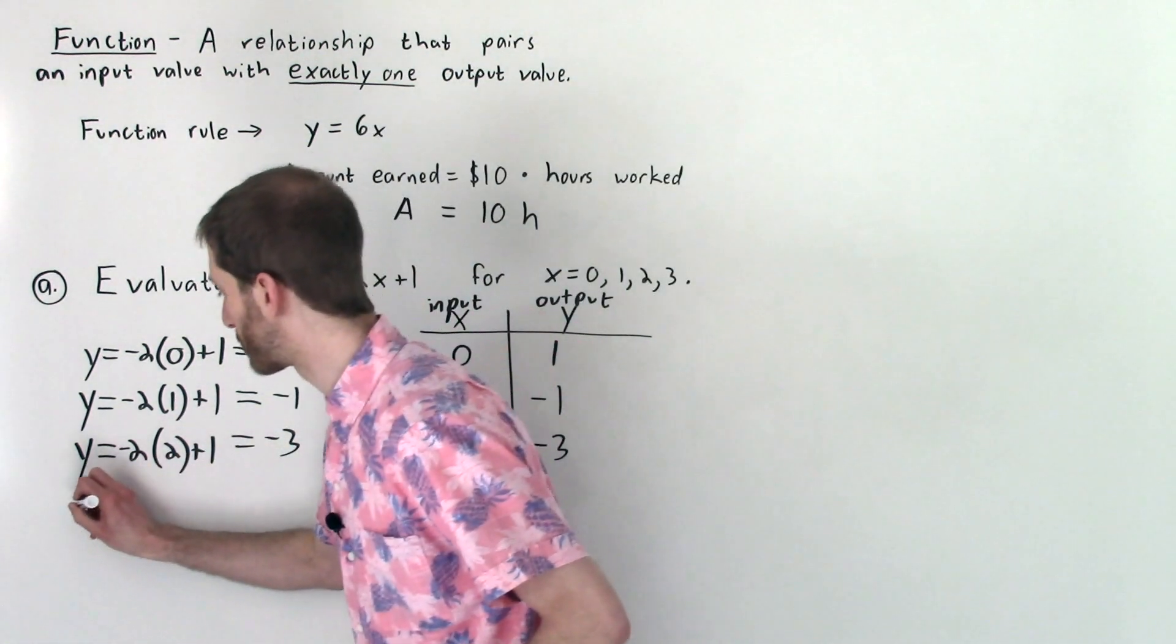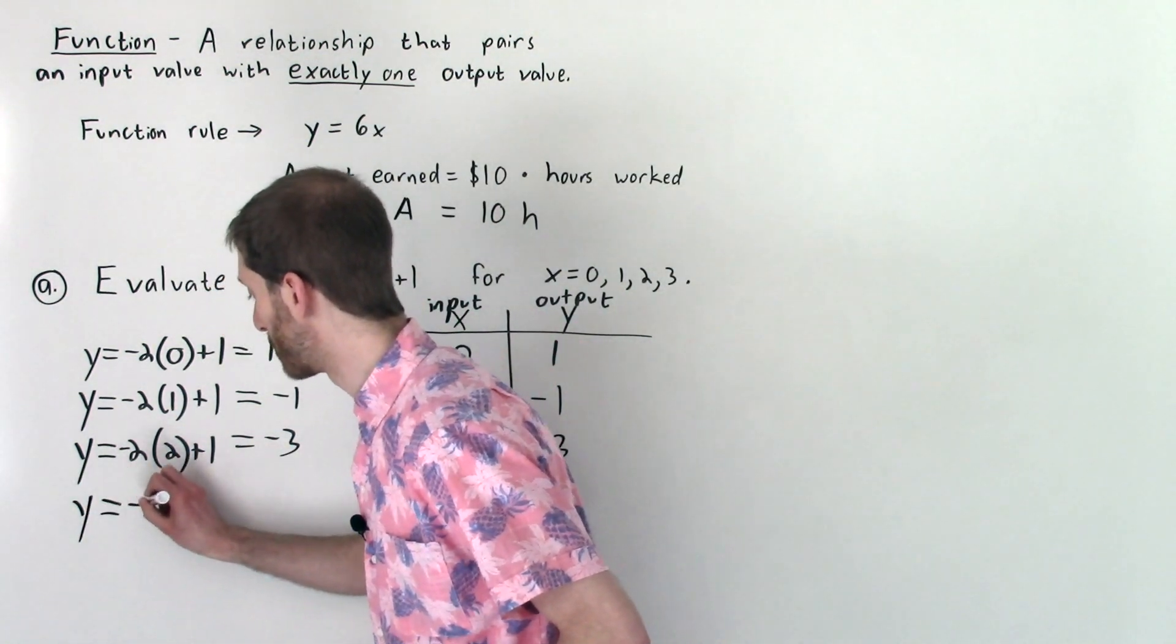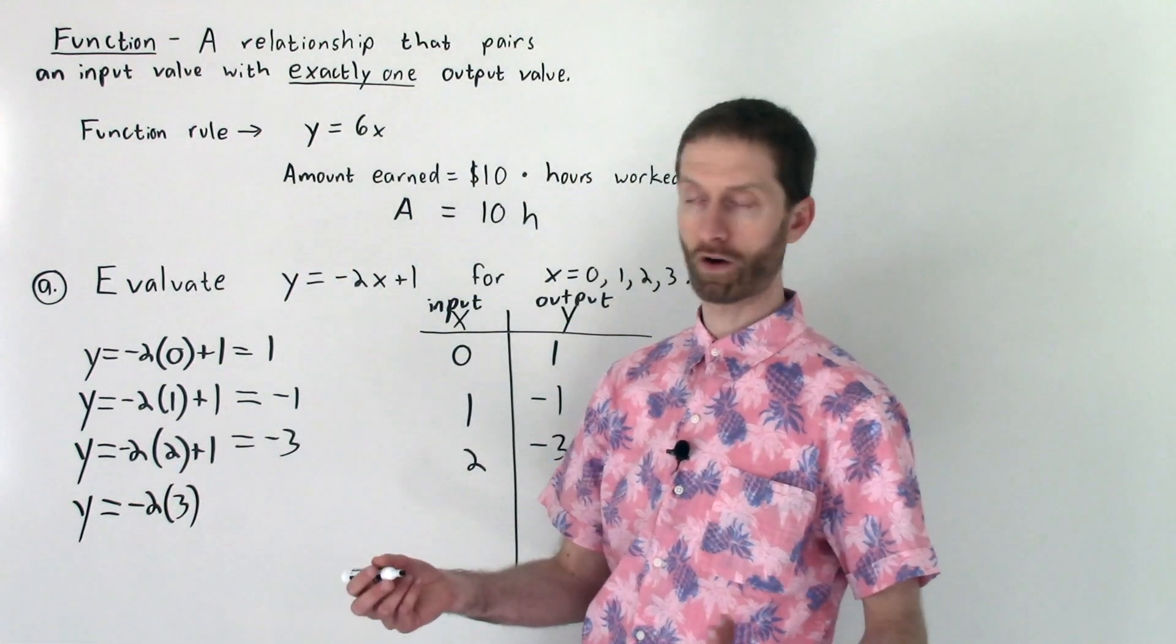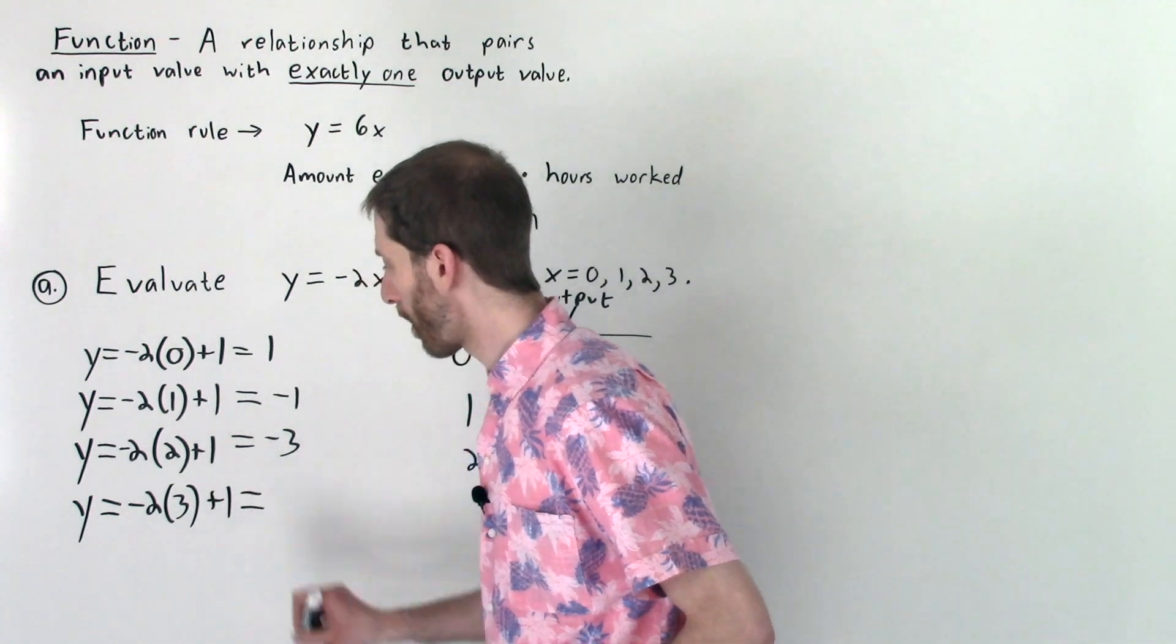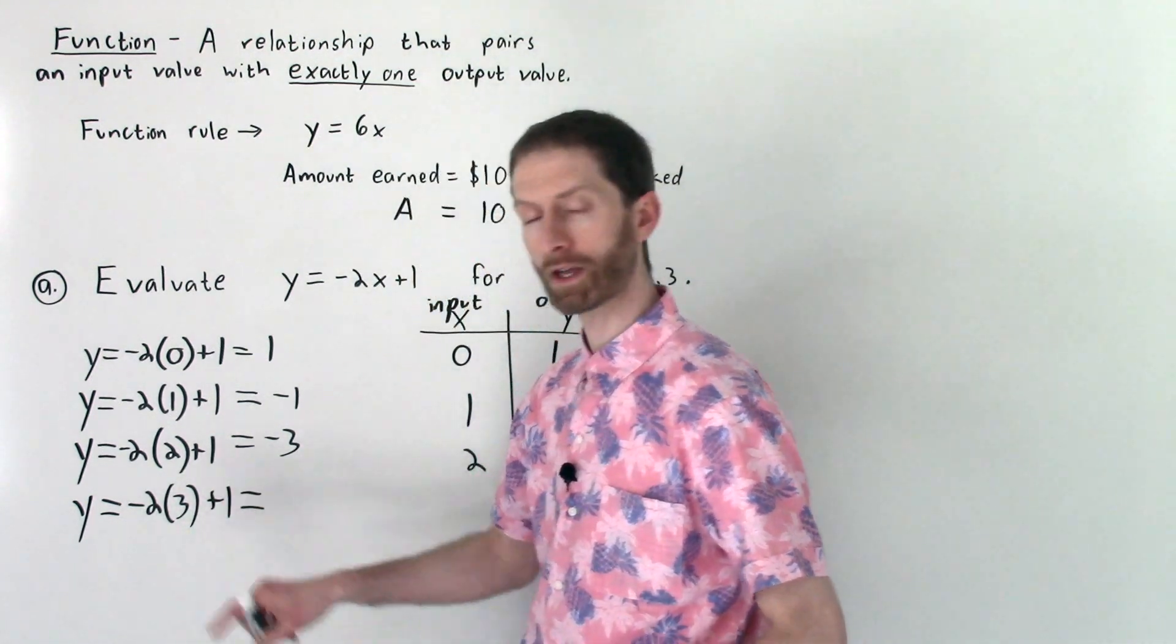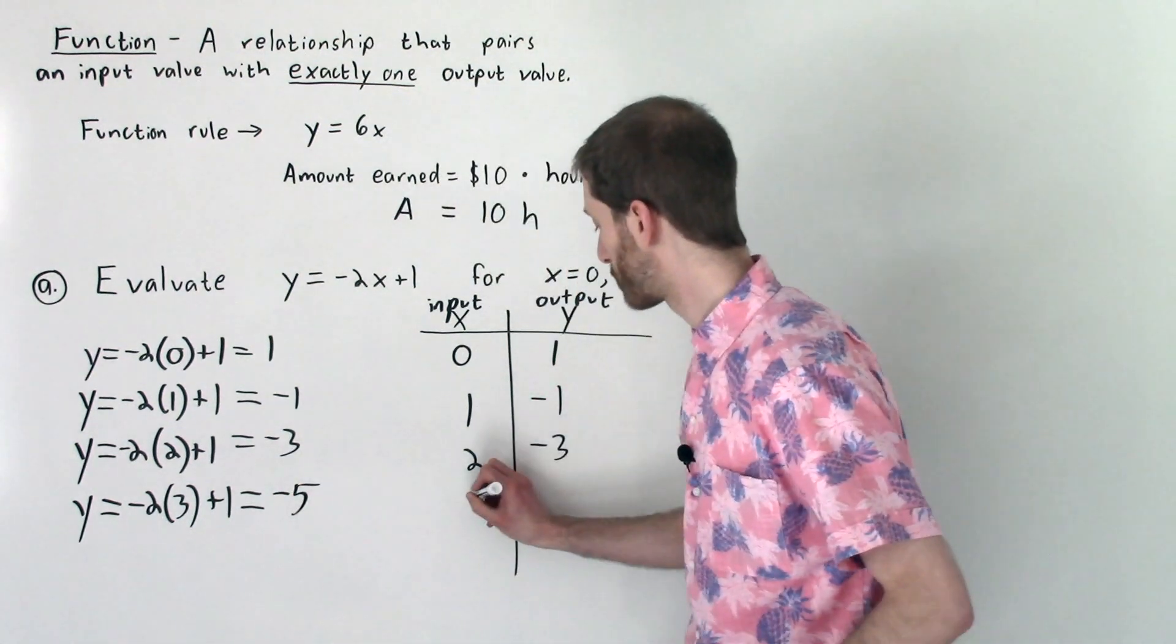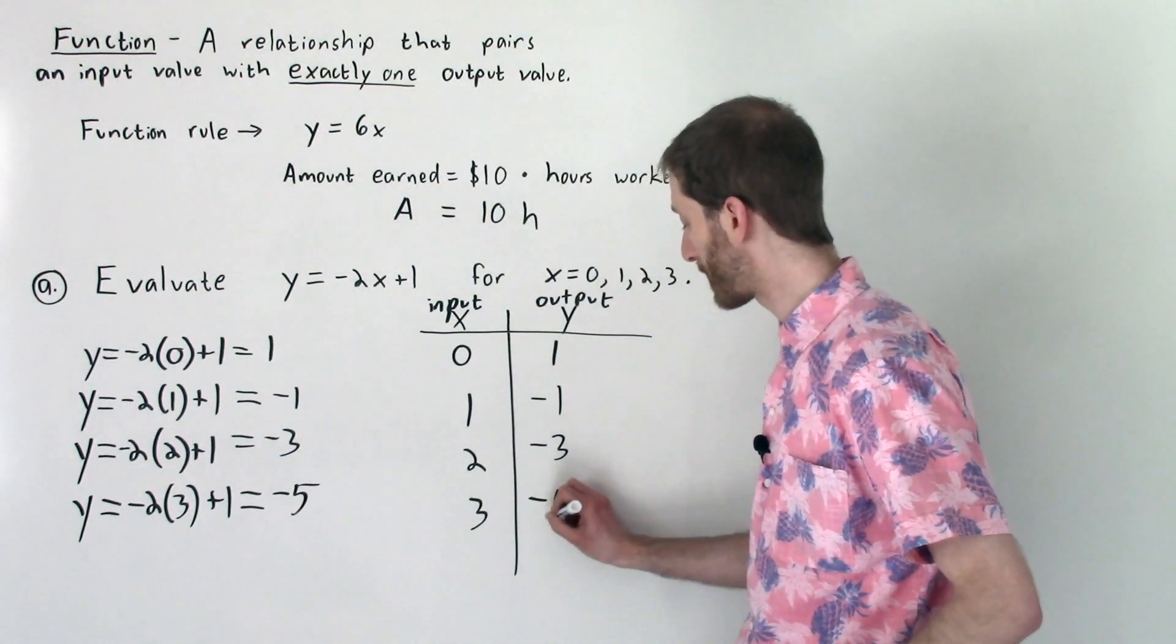Last but definitely not least, in fact it's the most here, is 3. So we input 3 in for our input variable x plus 1. Our output is, well let's see, negative 2 times 3 is negative 6 plus 1 is negative 5. So we input 3, output is negative 5.